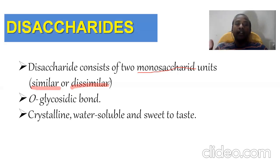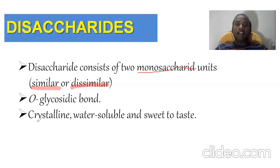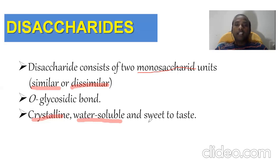If you see the properties of disaccharides, most of them will follow these properties. First, they are crystalline in nature — crystalline nature means they should be like sugar crystals. Most disaccharides are water soluble because they have many hydroxyl groups. And obviously these are sweet to taste. These are the three basic properties attributed to disaccharides.